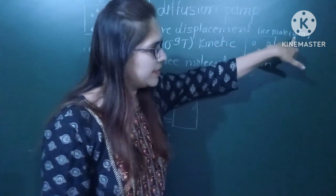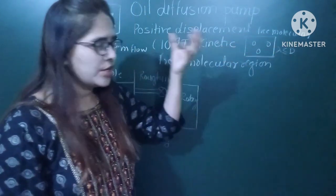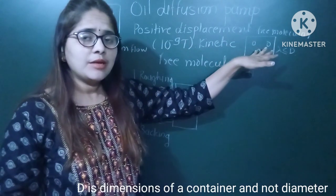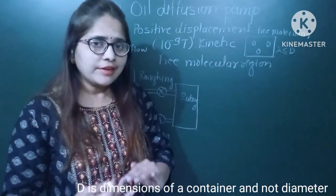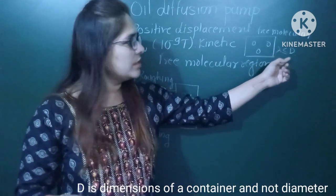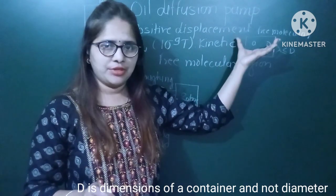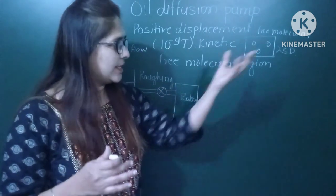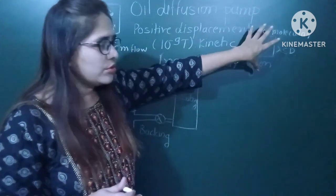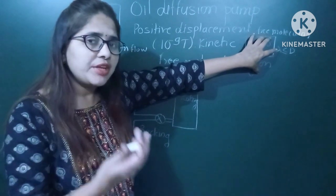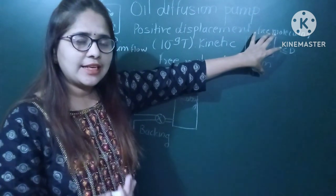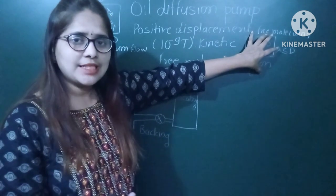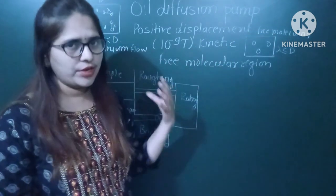You must highlight the term 'free molecular region.' It is a region or chamber in which the air molecules are already few, and lambda is nearly equal to or smaller than the diameter D. The chamber must previously be at around 10⁻³ or 10⁻⁴ torr — only for such systems can we use the oil diffusion pump.